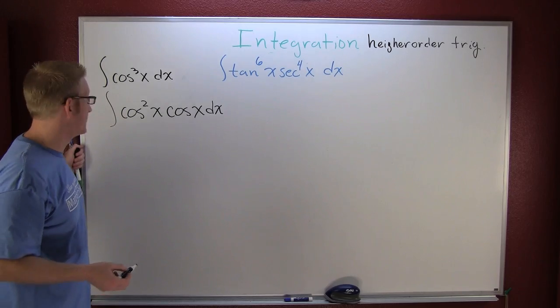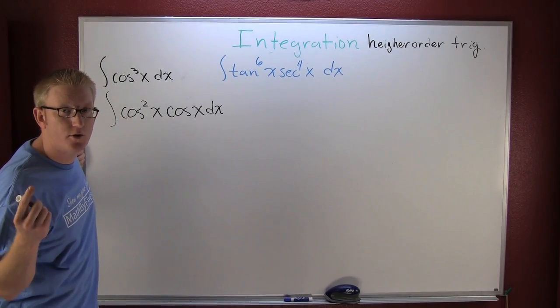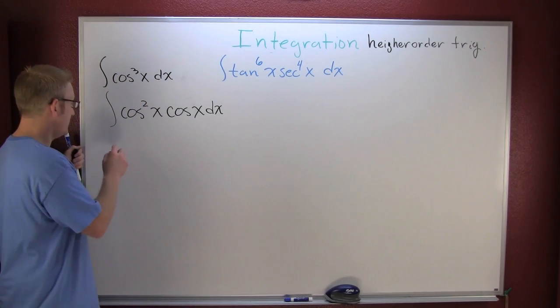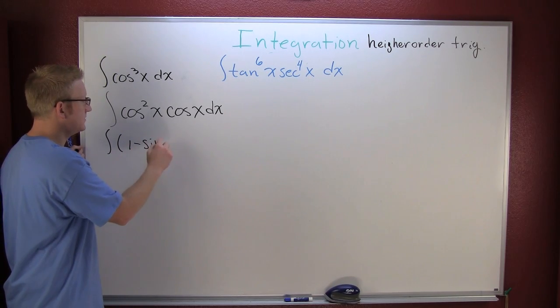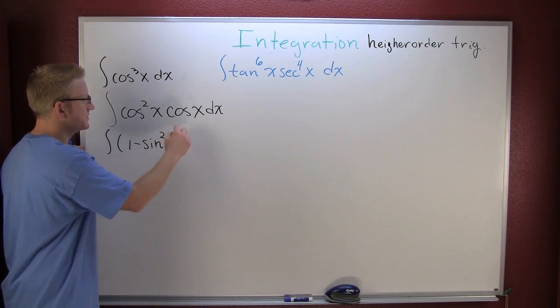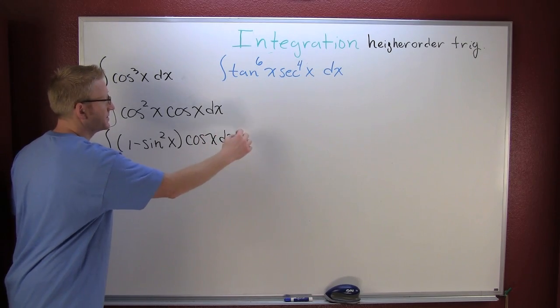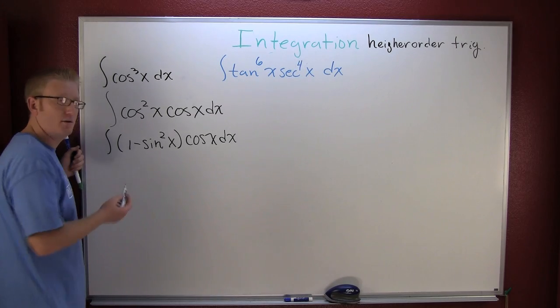You may be wondering why we would ever do something like that. The reason we're doing something like that is because we need to produce a sine somewhere. But we see cosine squared. Isn't that one minus the sine squared x times the cosine of x dx? I do believe by way of Pythagorean identity we're good on that.